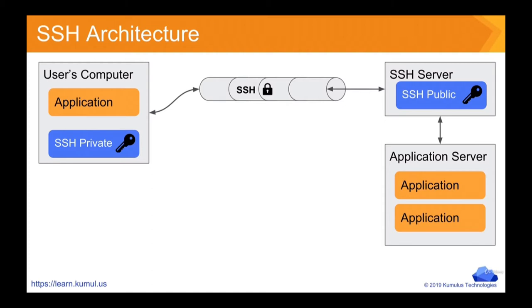You have a bunch of different ways that you can use SSH keys. The one we're going to target in this class is as a user key. You will have a private key on your own machine — this should never be shared or exposed to the public in any way, shape, or form. And then you'll have the public key, which can be placed out on a cloud server to help work the authentication process.